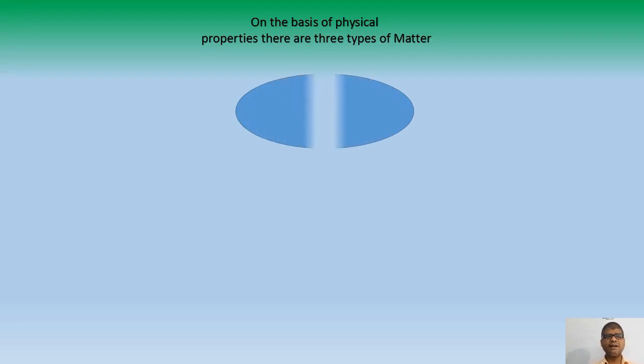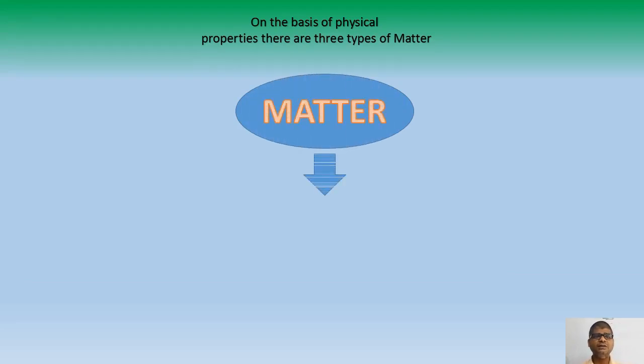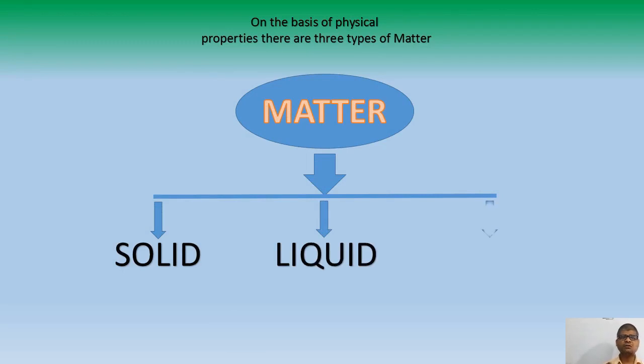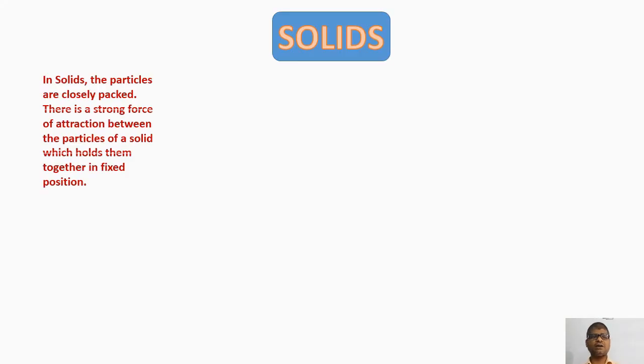On the basis of physical properties there are three types of matter: solid, liquid, and gas. Now let's see solids.